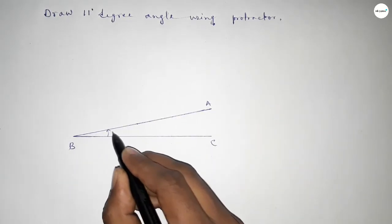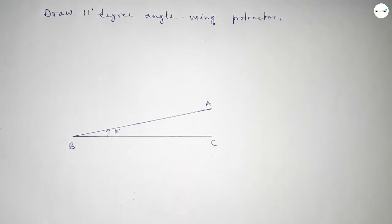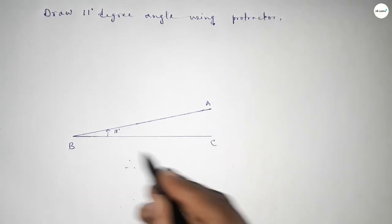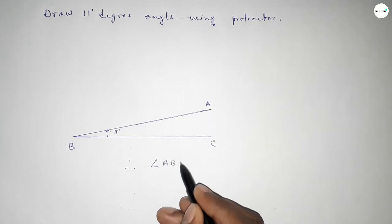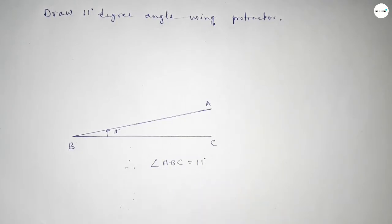So angle ABC, this is 11 degrees. Therefore angle ABC equals 11 degrees. That's all, thanks for watching. If this video is helpful to you, then please share it with your friend.